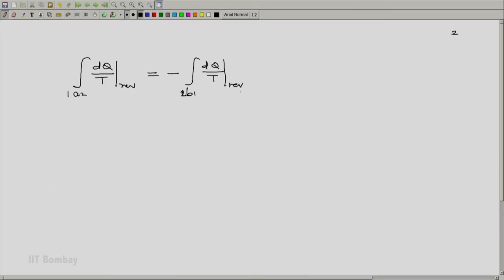So the right hand side can now be written down as equal to integral of over 2b1 minus dq by t, which will be integral 1b2. Notice that the path has been reversed. The path has been reversed, it has been traversed in the other direction and hence this minus dq will become dq by t.